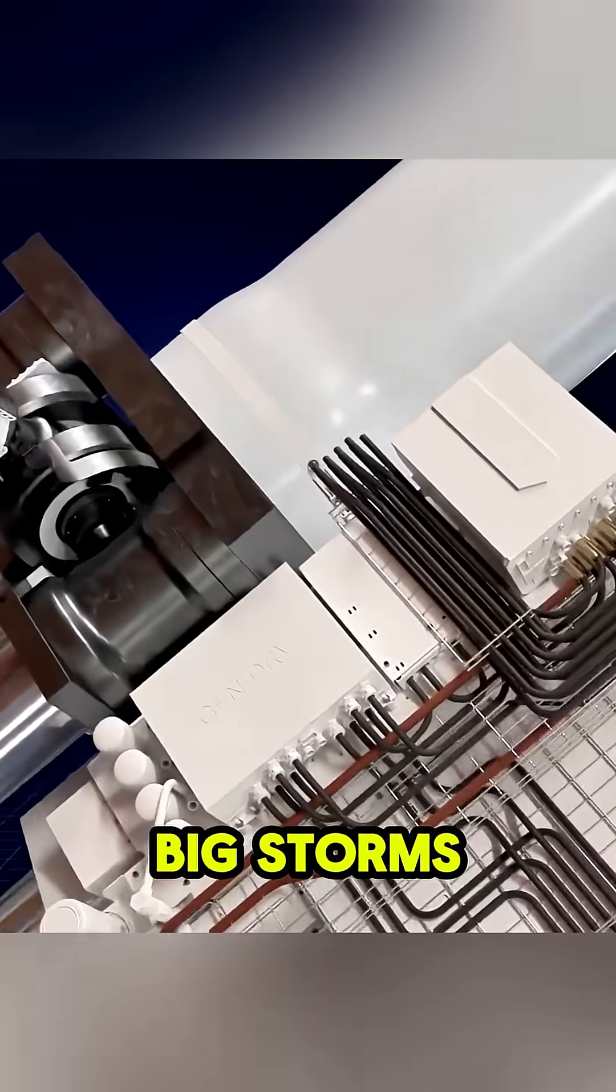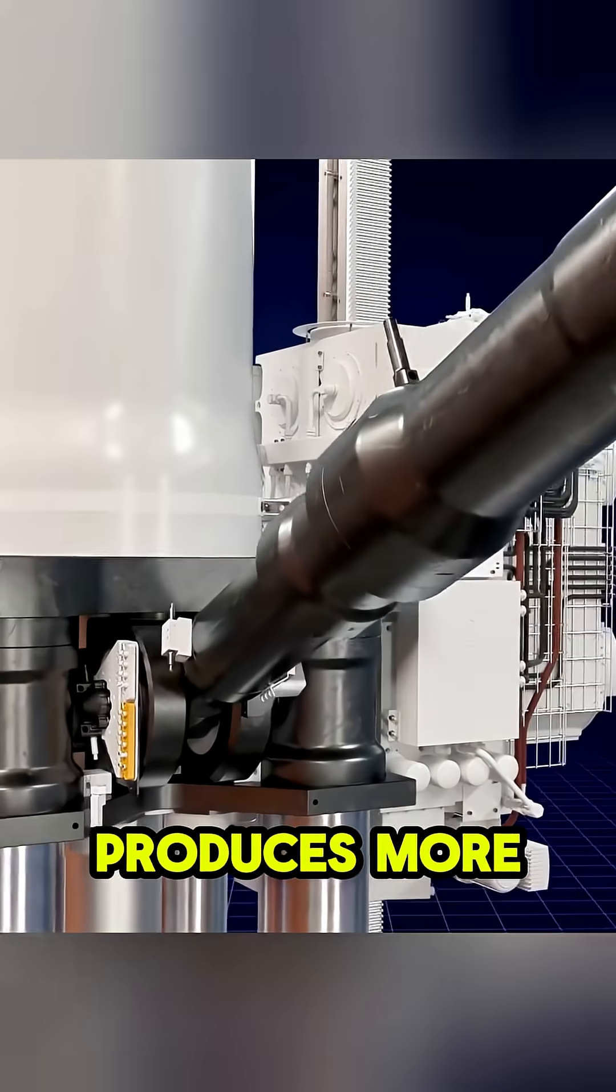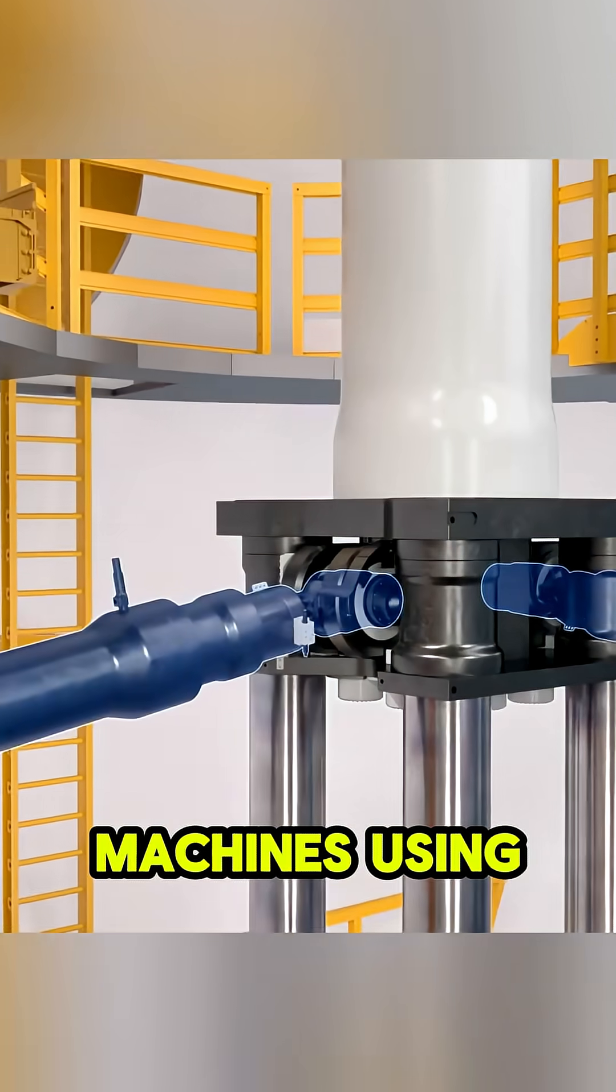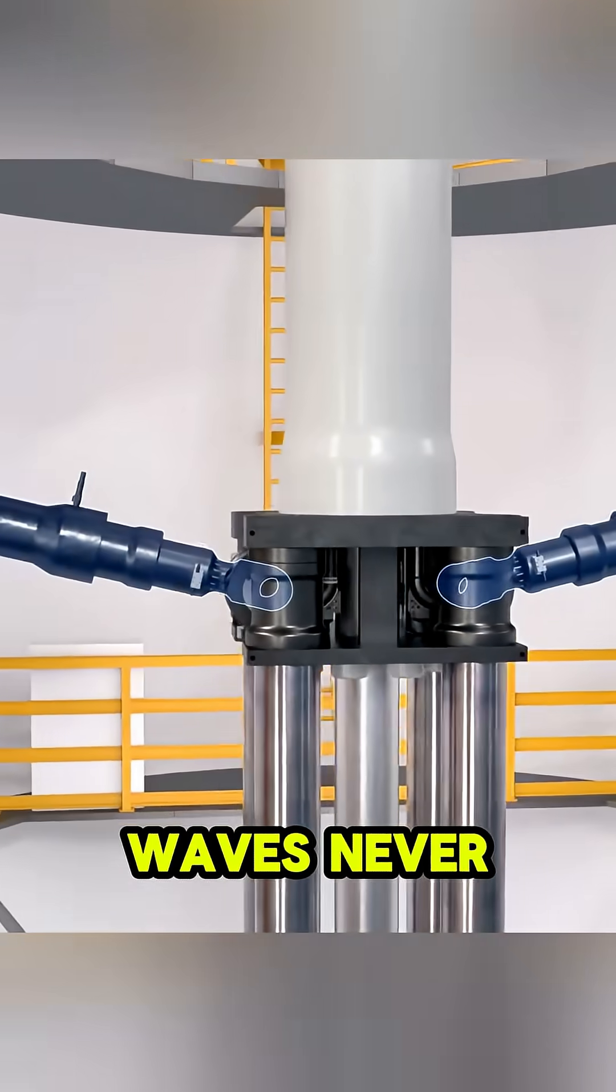What makes CorPower different? It's compact, strong, and built to survive big storms. It also produces more energy than older wave machines using less space, and because waves never stop, it can make power day and night, unlike solar or wind.